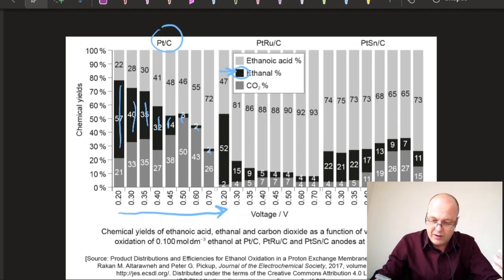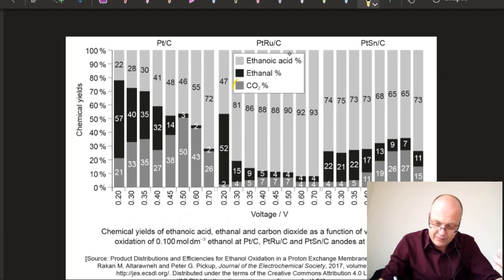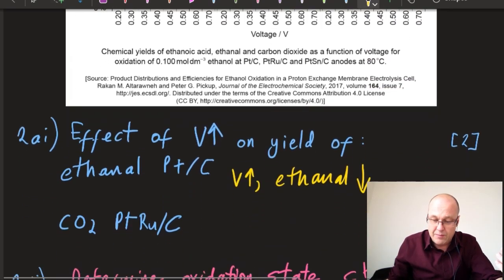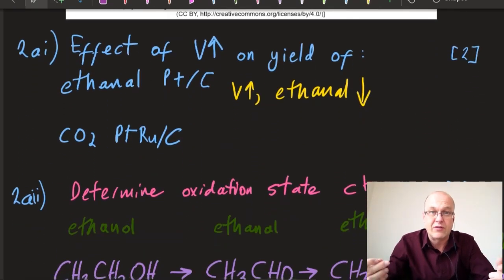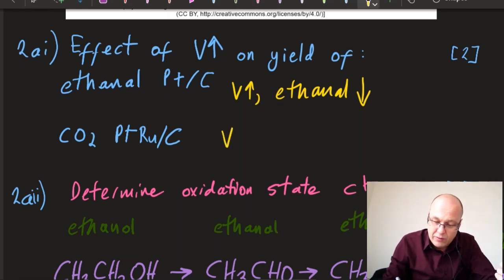Carbon dioxide on the platinum ruthenium carbon catalyst: carbon dioxide is this one, and we're on this catalyst. The amount of carbon dioxide appears to go up, plateau, and then go down again. The IB would accept 'increases then decreases' or 'increases, plateaus, and then decreases.' So as you increase the voltage, the amount of carbon dioxide increases then decreases.